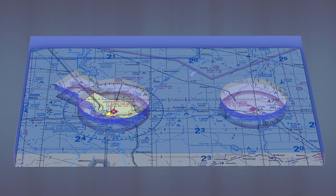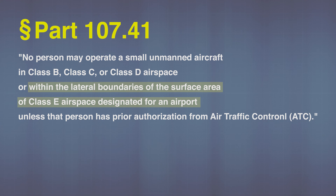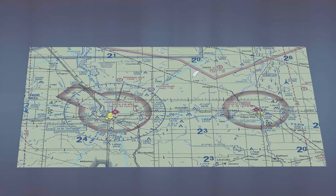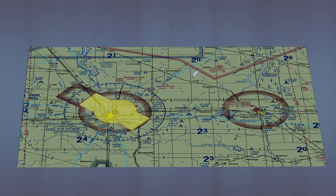All of class G is uncontrolled and all of class E is controlled airspace. According to Part 107.41, you only need authorization to fly in class B, C, D, and class E to the surface within the lateral boundaries of an airport. Meaning in this sectional, even above 1,200 feet, you would only need authorization to fly within this dashed magenta shape.